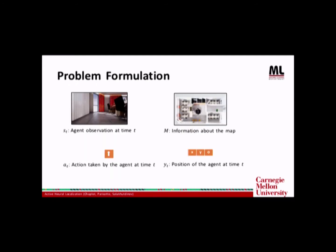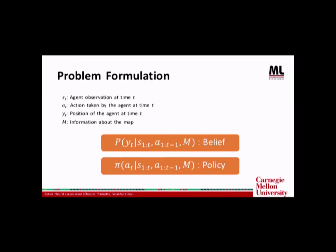So let's define the problem formally. Let ST and YT be the agent observations, actions, and position at time t. And let M be the information about the map. Then we are interested in predicting two quantities. The first is the belief or the probability of the location of the agent given the map information and past observations and actions. And the second is the policy or the probability of taking action in order to localize as fast and as accurately as possible.